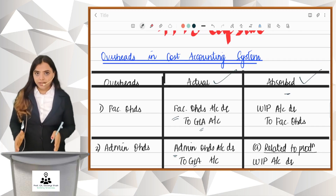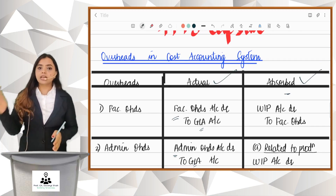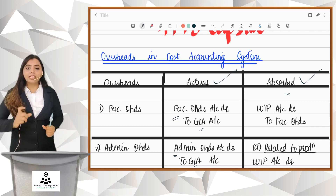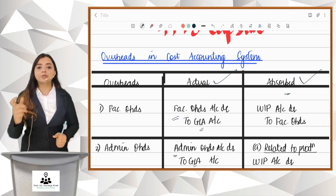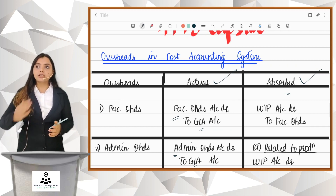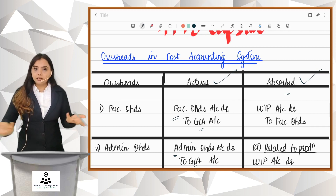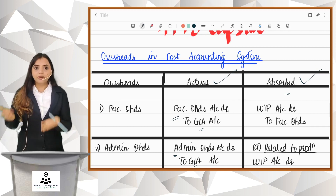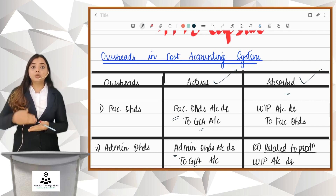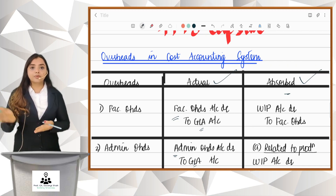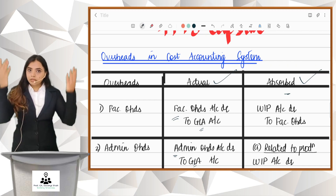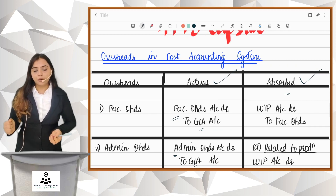Once you record the actual overheads, it is time to record absorbed overheads. Absorbed overheads are to be calculated as per the absorption rate given in the question. Most of the time they will give you the absorbed amount directly — use that and record the entry. But if they don't give you the absorbed amount, you have to calculate it using the absorption rate, which you already know how to do from the overheads chapter.